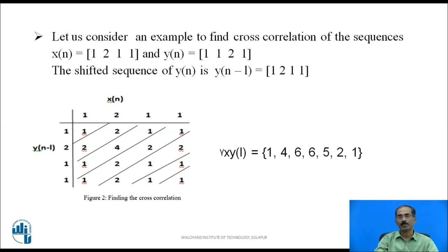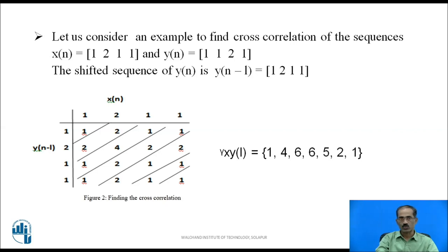Let us consider an example to find the cross-correlation of a sequence. The given sequences are x[n] = {1, 2, 1, 1} and y[n] = {1, 1, 2, 1}. The shifted sequence y[n - l] is the time reversal of y[n], giving {1, 2, 1, 1}. The procedure is the same as autocorrelation.